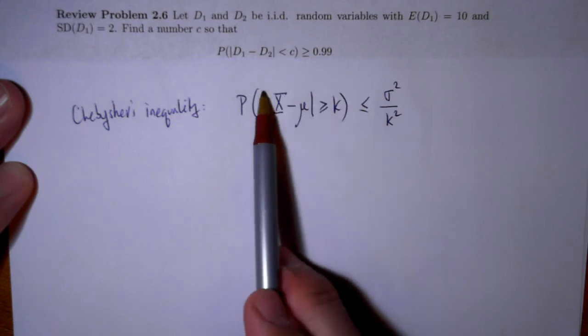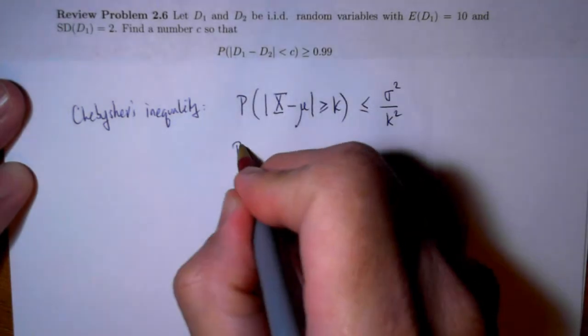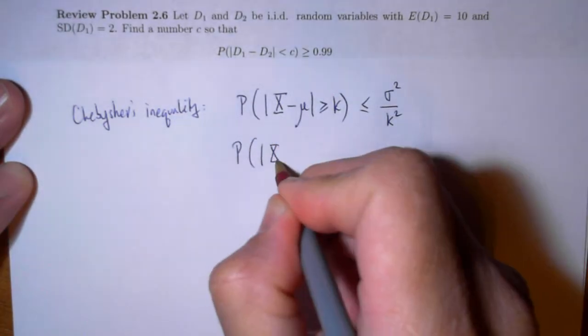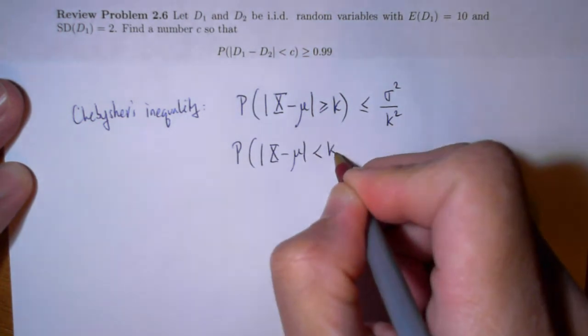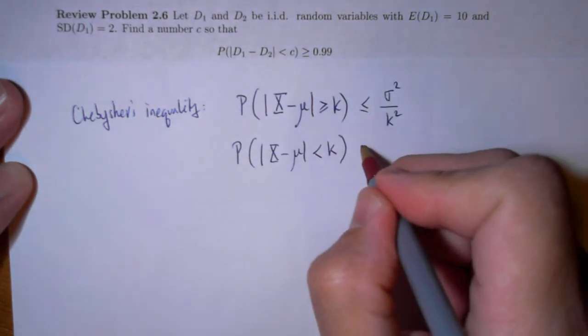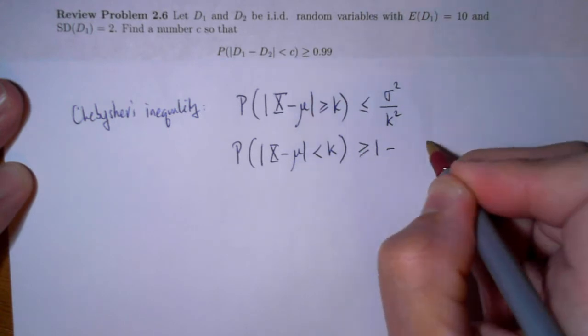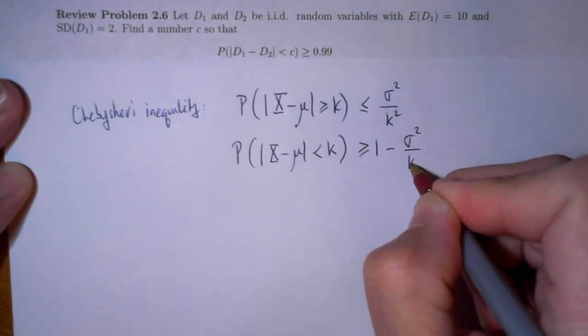Now if I take the complement of this event, the probability that absolute value of x minus mu would then therefore be less than k would therefore be greater than or equal to 1 minus sigma squared over k squared.